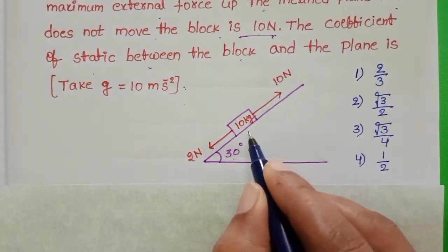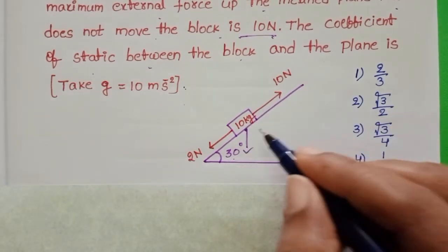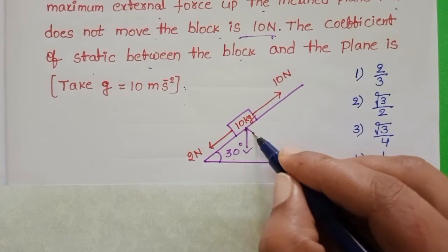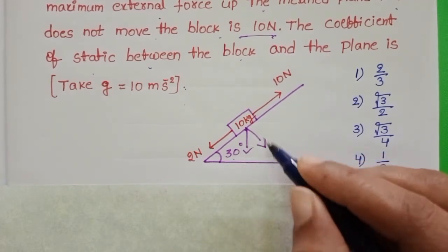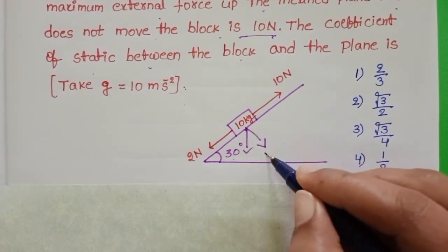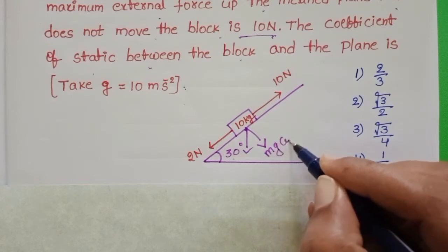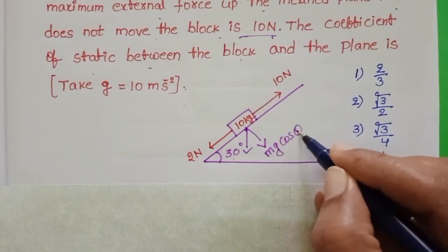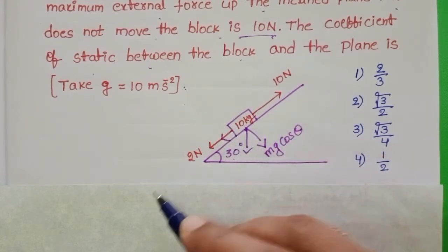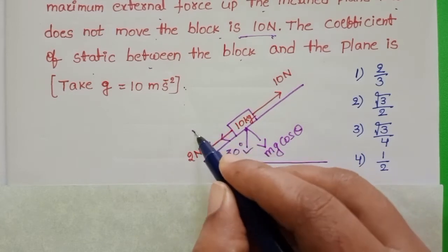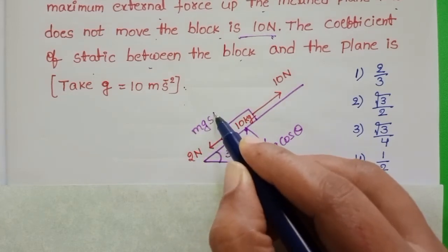The weight of the block acts in the downward direction and is resolved into two rectangular components. Along the normal direction, the component is mg cosθ, and along the inclined plane in the downward direction, the component is mg sinθ.